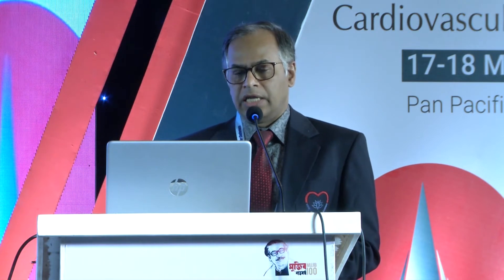There is another term called inverted provisional stenting. When there is a lesion in the circumflex ostium, putting a stent from the left main to the circumflex and jailing the LAD ostium — if the LAD ostium is compromised, then stenting in the LAD ostium is called inverted provisional stenting, which may be by either TAP, T, CULOTTE, or even inverted CRUSH.